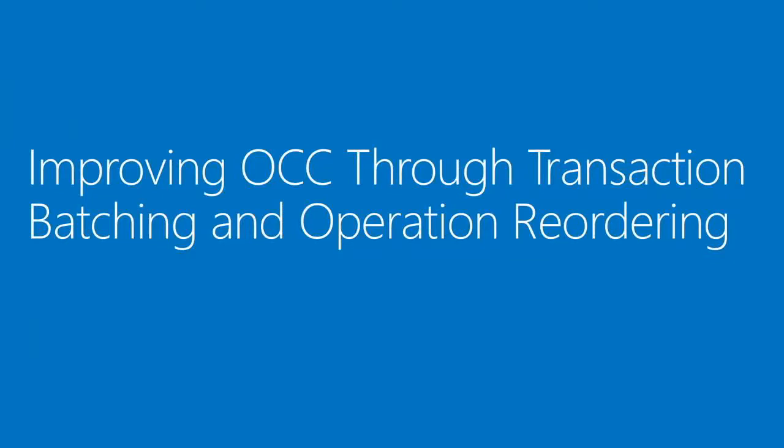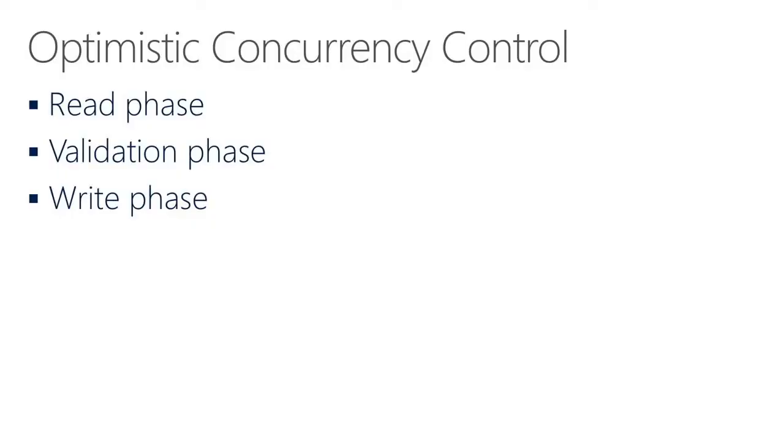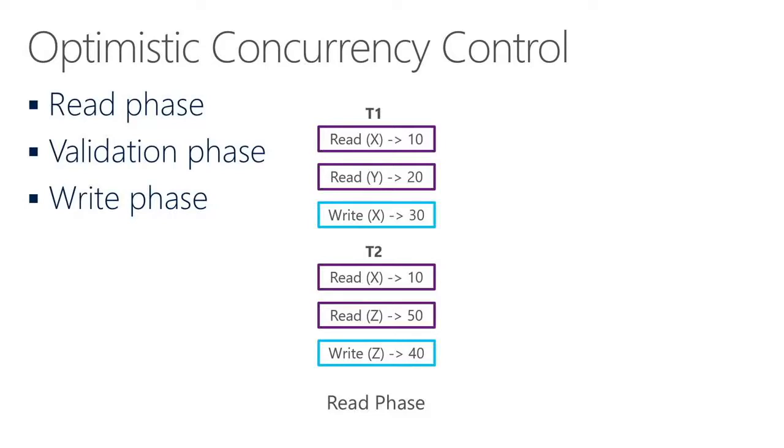Now, back to transactions. Optimistic concurrency control (OCC) is a transaction concurrency control protocol where a transaction first executes its operations, optimistically assuming there is no conflict. Updates are stored in a private workspace. Before committing, there is a validation procedure to check whether any conflicting transactions exist. If not, it writes its updates. If there is a conflict with another transaction, it aborts.